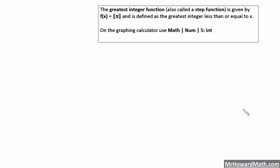Hello, I'm Mr. Howard. In this video we're going to look at the greatest integer function, also called the step function. When we graph these a little bit later you'll see where it gets that name from. The greatest integer function is given by f(x) equals the greatest integer of x. This symbol uses two sets of parallel bars, which look similar to absolute value, but there are two sets instead of just one.